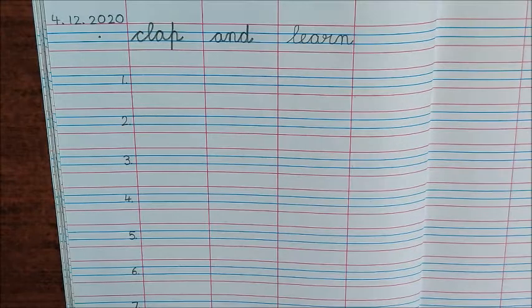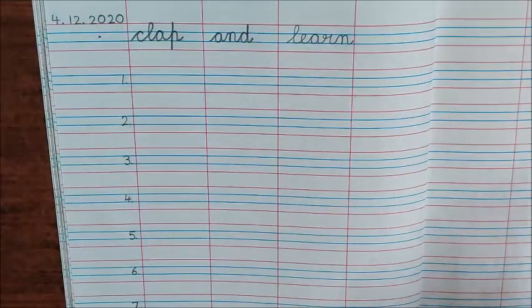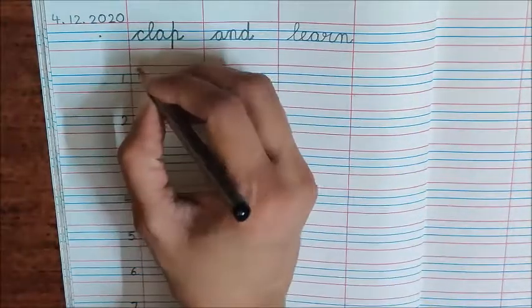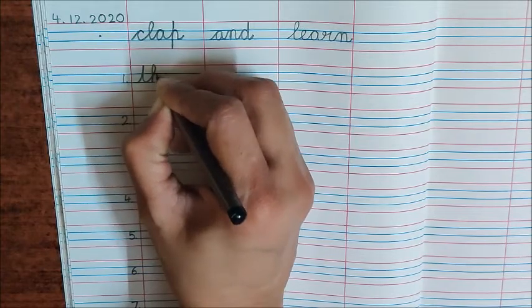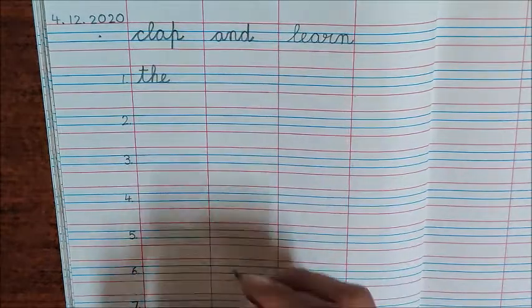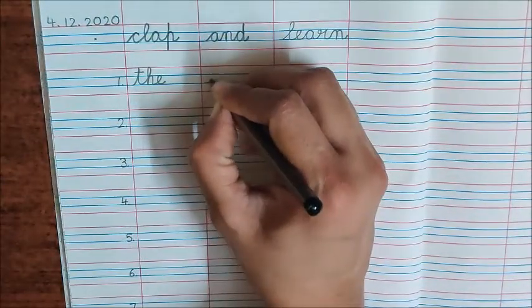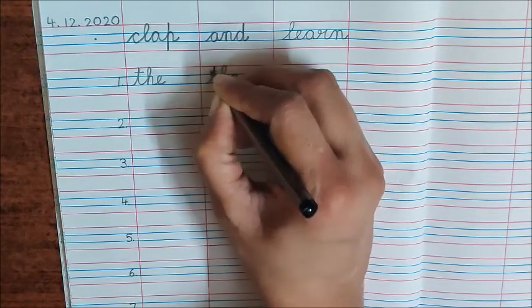First word is 'The'. What are the letters in the word The? T, H, E — The. So write down here: T, H, E — The. In the next column, write it again: T, H, E — The.